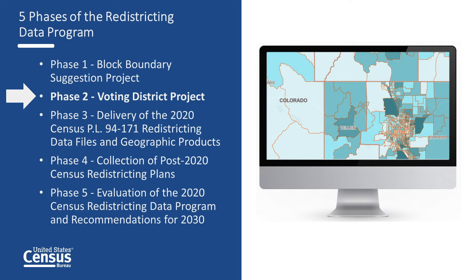Participation in Phase 2 of the Redistricting Data Program was conducted through the nonpartisan liaison designated by each state. Phase 2 was conducted in three cycles. The first two cycles were an initial identification of the voting districts and a verification stage to ensure the suggested updates were accurately applied. The third cycle was an additional round of verification for those states participating in one or both of the first two cycles to further review and adjust the voting districts.